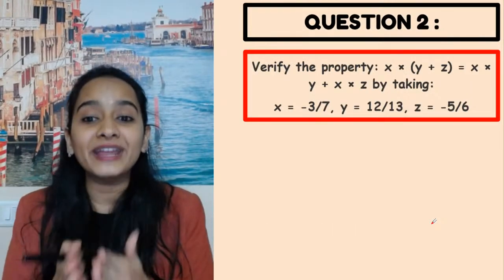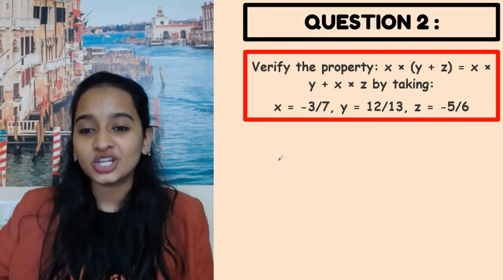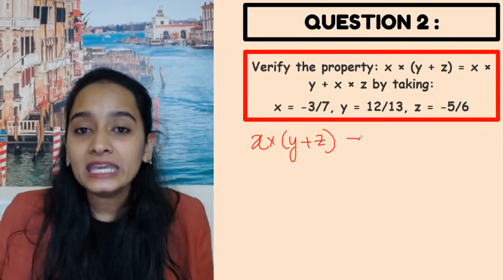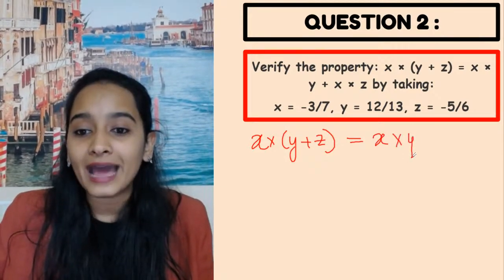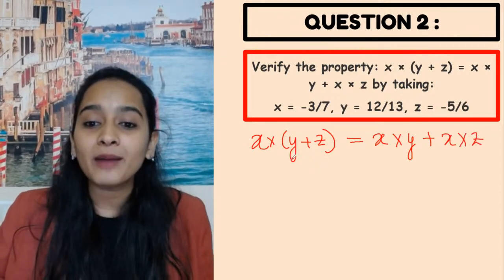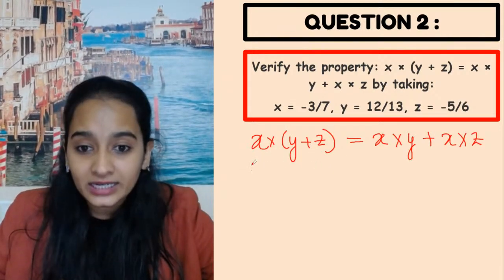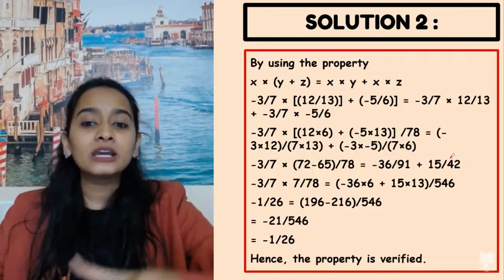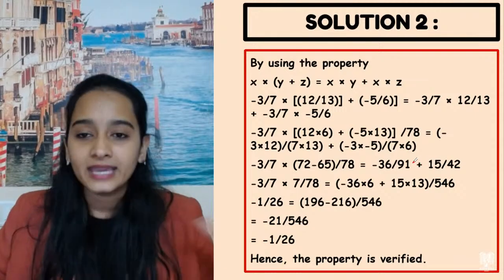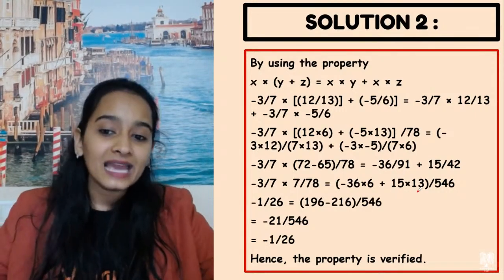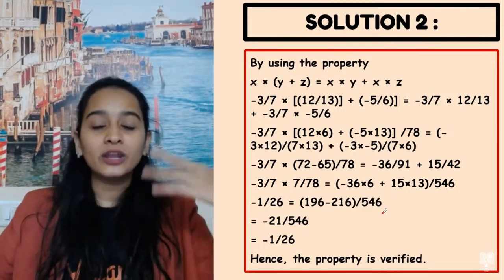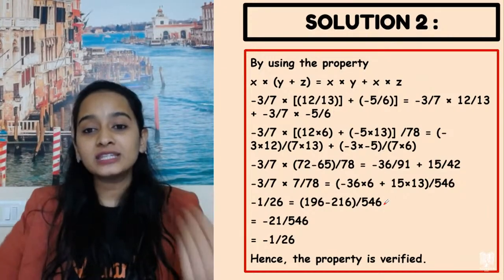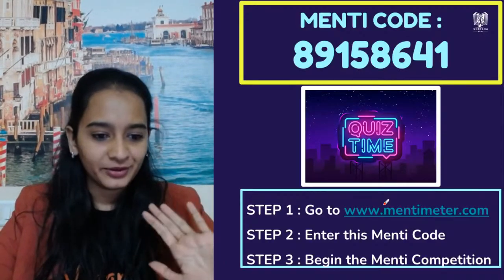The next question is a verification problem. When you have a verification question, you have to show that your left-hand side is equal to your right-hand side. Substitute the values of x, y, and z, first solve the left-hand side, then solve the right-hand side, and check whether LHS equals RHS. In this case the answer is yes — they are equal. So when your left-hand side equals your right-hand side, you can say the property is verified.